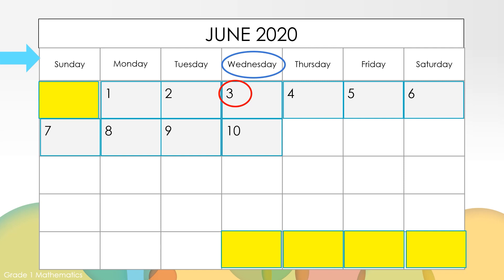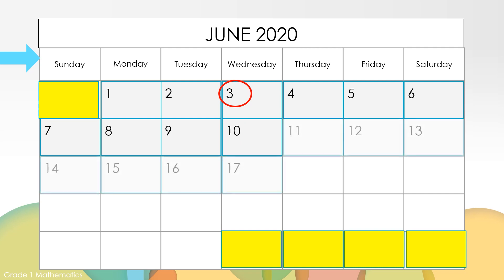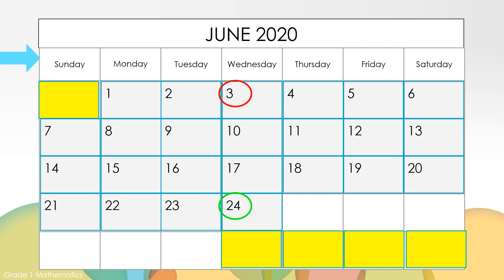Today is June 3rd. What will be the date in three weeks? Here is one week: June 10th. Here is two weeks: June 17th. Here is three weeks: June 24th.